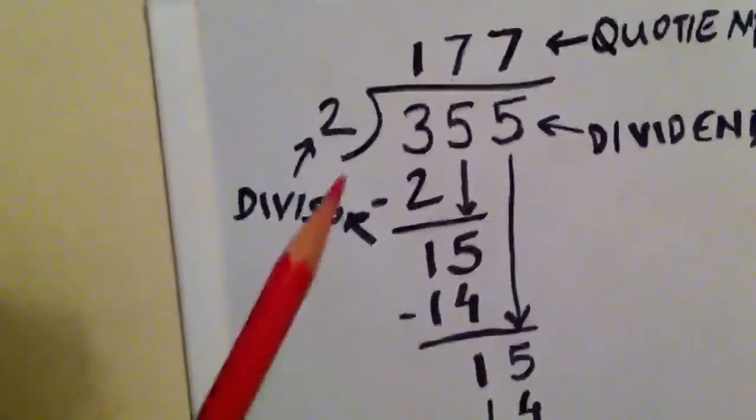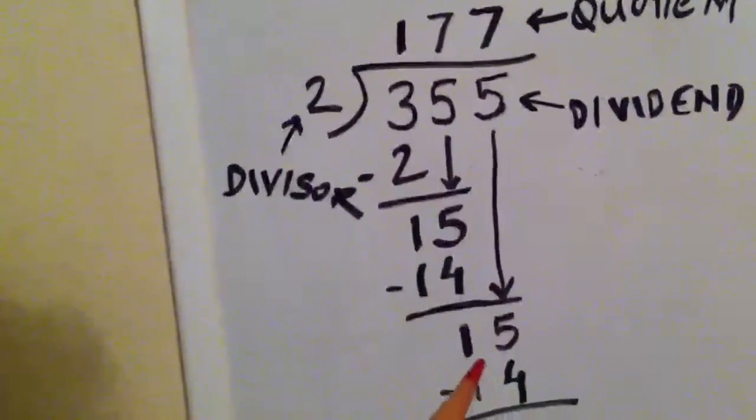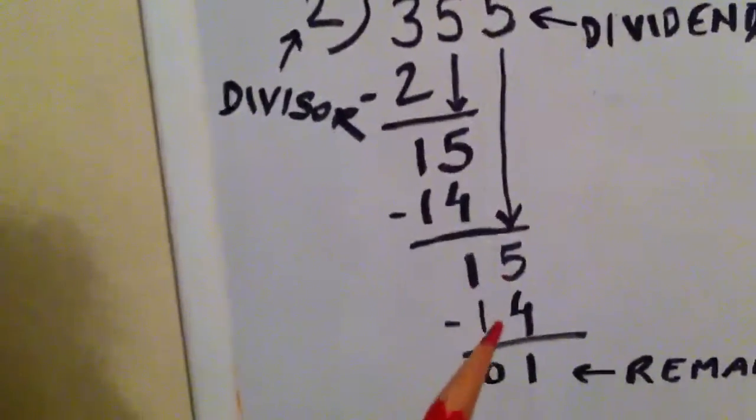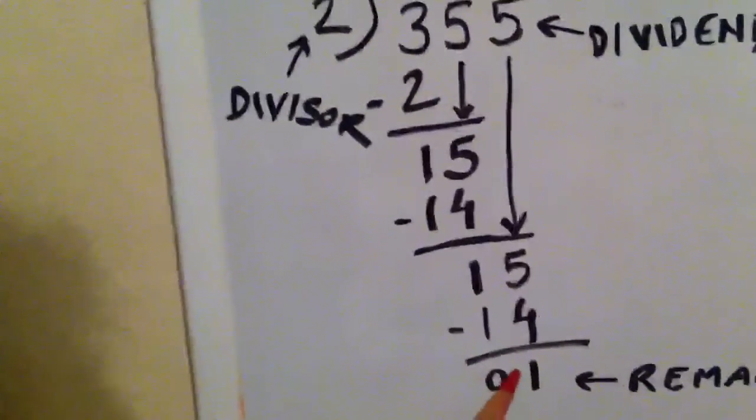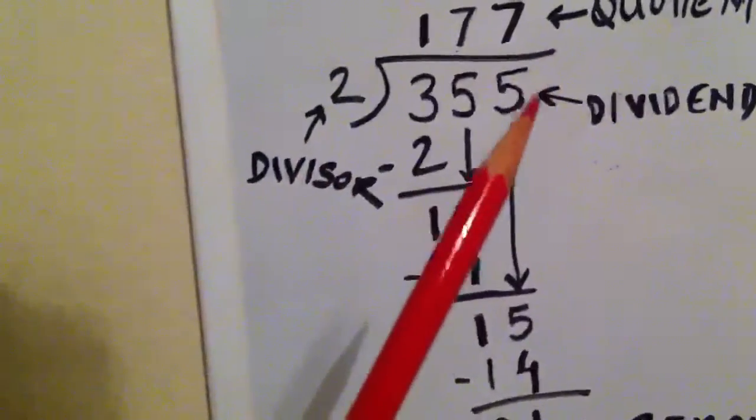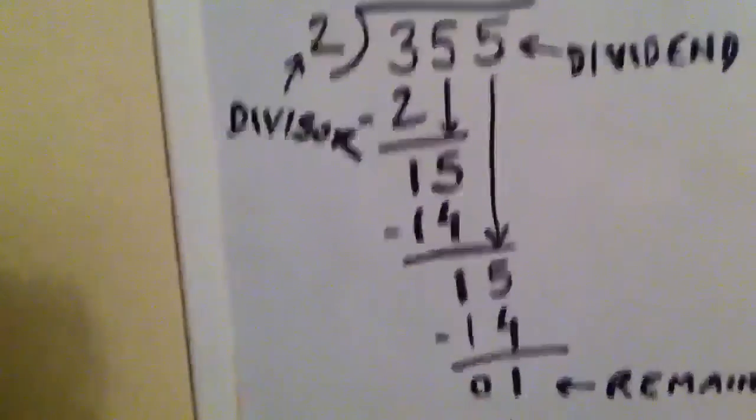So here again we get 15. So 2 times 7 is 14, and 15 minus 14 is 1 again, which is not further divisible by 2. We don't have any more digits, so that's the end of this division.